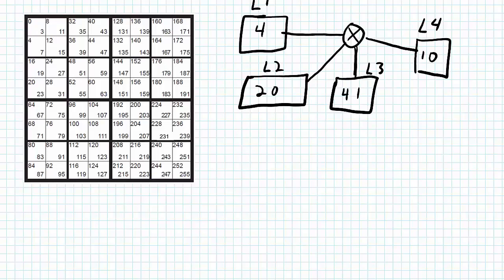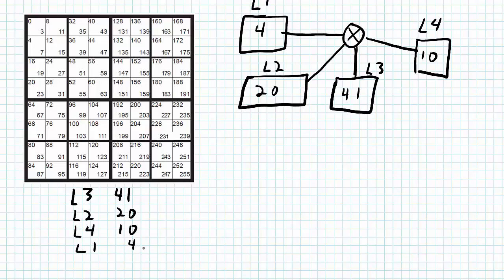Let's do one more example with four LANs all connected to the same router, with sizes ranging from four up to 41 hosts required — plus the IP address for the default gateway on the router. Ordering by size: L3 has 41 devices, L2 has 20 devices, L4 has 10 devices, and L1 has four devices. Network sizes needed: 64 for 41 devices, 32 for 20, 16 for 10, and 8 for four devices.